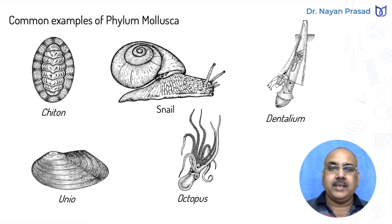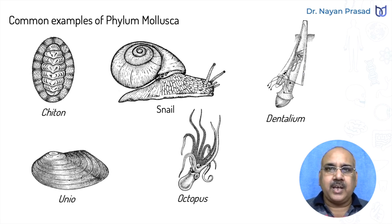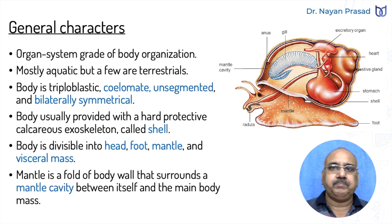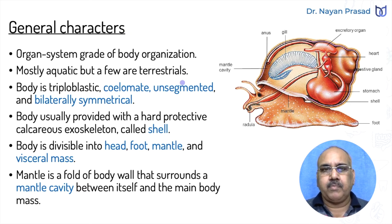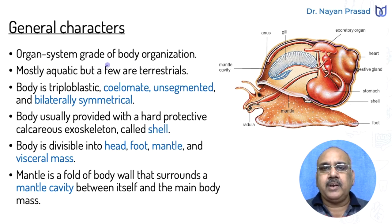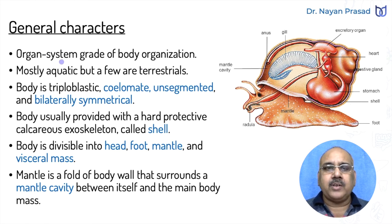The shell is made up of calcium carbonate and it protects the body. Now let us see the general characters of Phylum Mollusca. In molluscs, the body has organ system grade of body organization — different organ systems are developed.